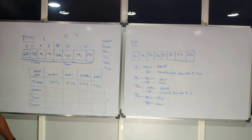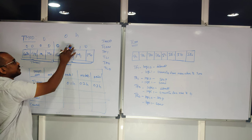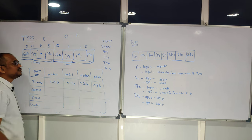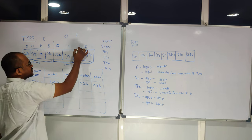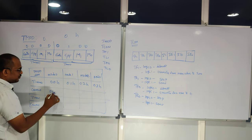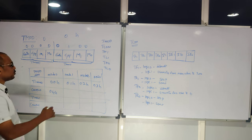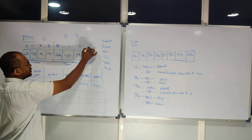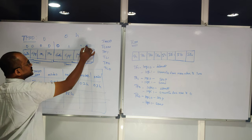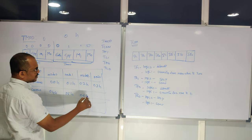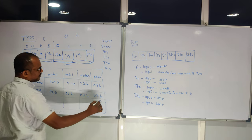For counter 0 mode 0, you change the counter/timer bit to logic 1 with the other bits as 0, giving 04h. Counter 0 mode 1 is 05h, counter 0 mode 2 is 06h, and counter 0 mode 3 is 07h.